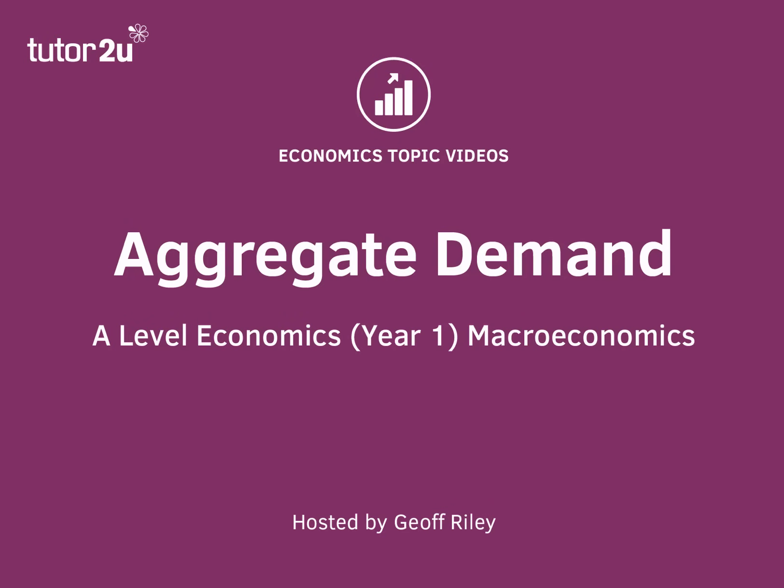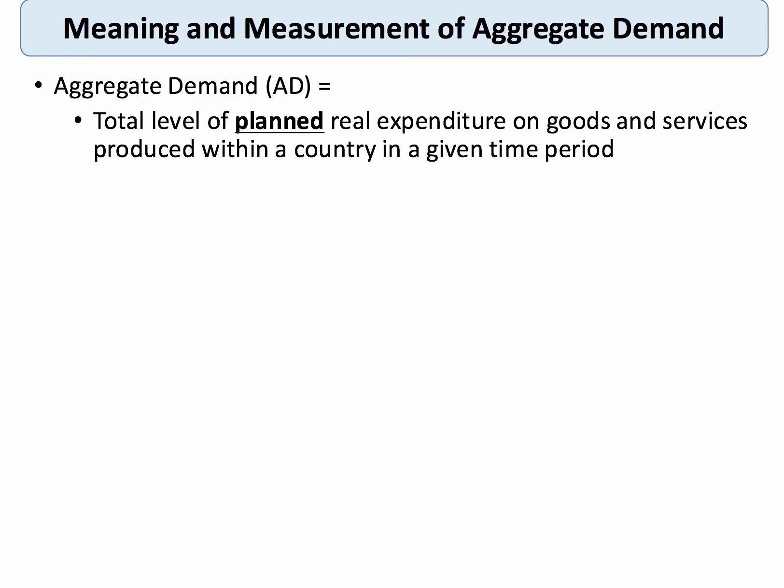Hi there. In this topic video we're going to focus on introductory macroeconomics and in particular the concept of aggregate demand. Aggregate demand is a big number and a really important idea in macroeconomics — aggregate of course just means total. We want to measure how much is being spent on goods and services by all consumers, businesses, the government, and people and firms overseas. Aggregate demand is the total level of planned real spending on goods and services produced within a country in a given time period — normally a year.